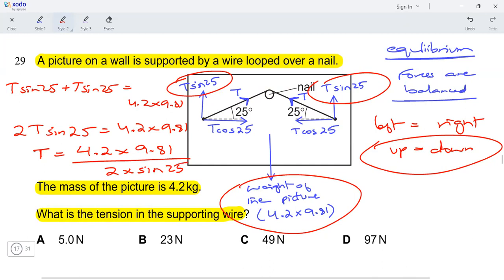And if I solve that, I am getting 48.7. 48.7, which can be rounded off to 49. 49. And that's my answer.